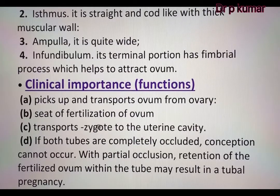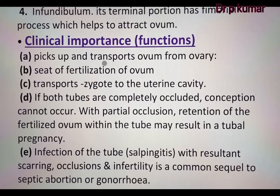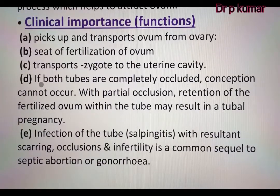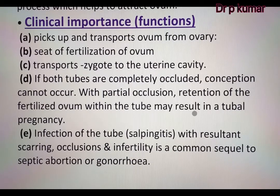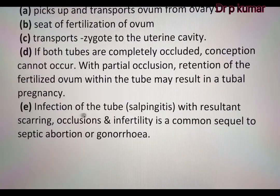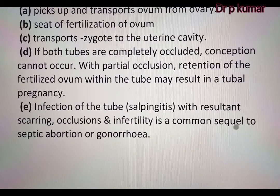Clinical importance of the fallopian tubes: They pick up and transport the ovum from the ovary, and are the seat of fertilization of the ovum, transporting the zygote to the uterine cavity. If both tubes are completely occluded, conception cannot occur. With partial occlusion, retention of the fertilized ovum within the tube may result in tubal pregnancy. Infection of the tube — salpingitis — with the resultant scarring, occlusion and infertility is a common sequel to septic abortion and gonorrhea.